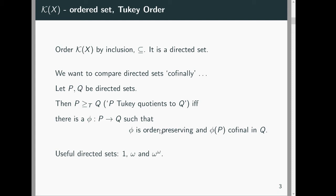We need to understand how the compact sets fill out the space — how they are co-final. There's a standard way to look at directed sets after co-finality called the Tukey order. P and Q are directed sets — think K of X. We say P is bigger than Q if there is an order-preserving map from P to Q whose image is co-final.